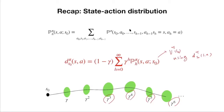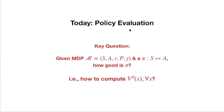A student asks: is there an intuitive reason why (1 - gamma) appears in the front of the distribution? The instructor explains this is also a homework zero problem — with the normalization constant (1 - gamma), this becomes a valid probability distribution. Without it, it's proportional to a distribution but doesn't sum to one. The term (1 - gamma) comes from the geometric series: 1 + gamma + gamma^2 + gamma^3 + ... = 1/(1 - gamma).